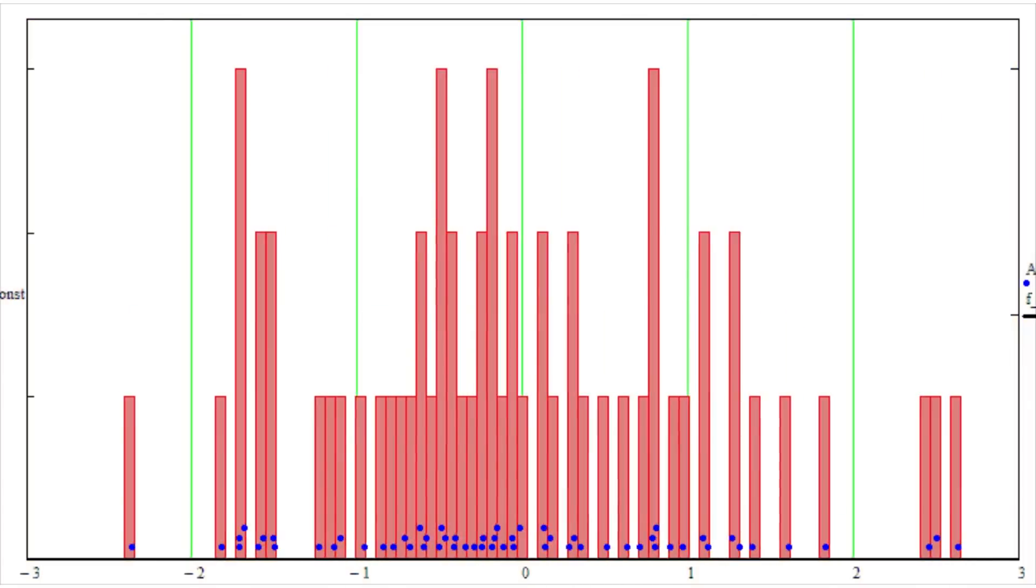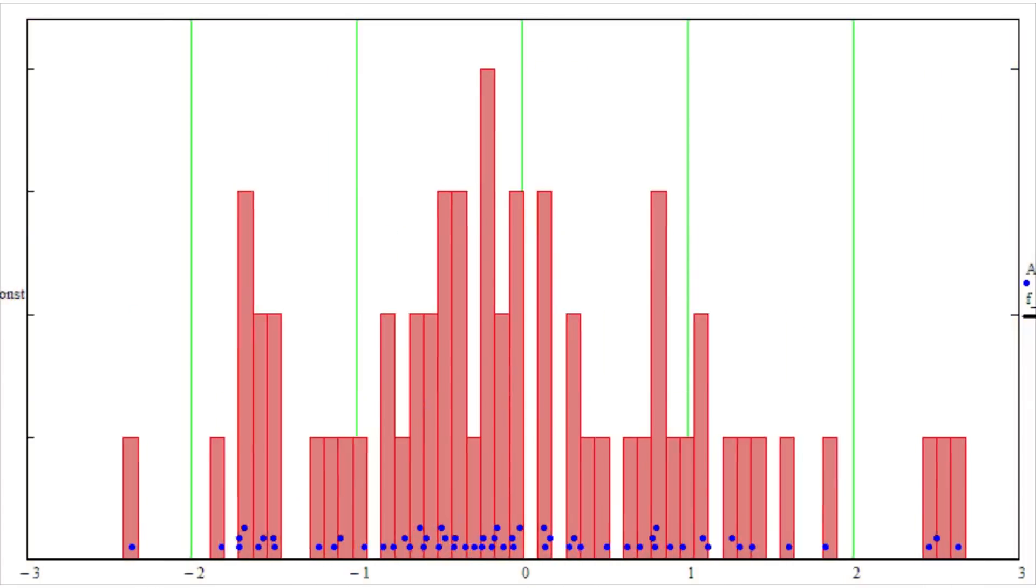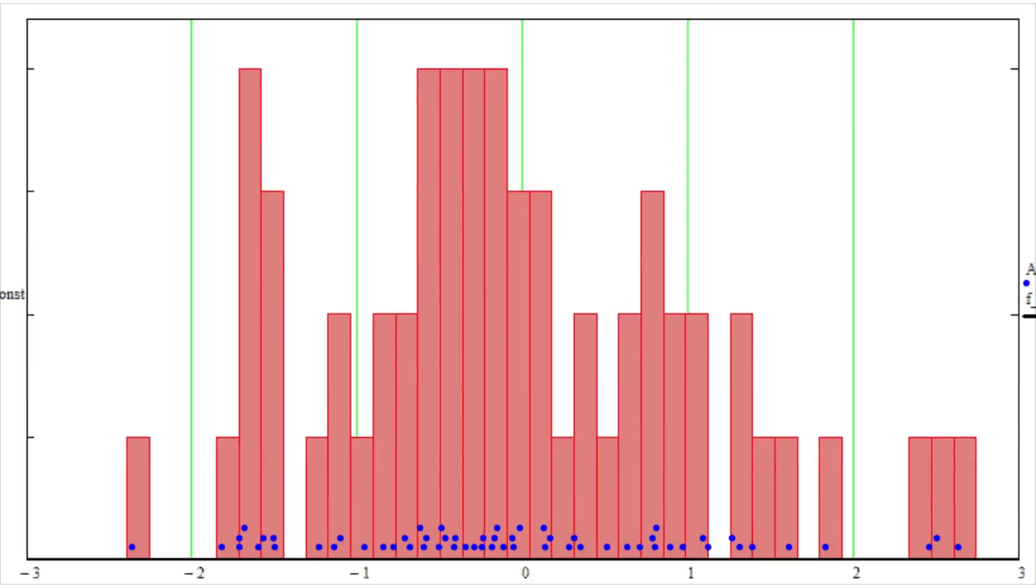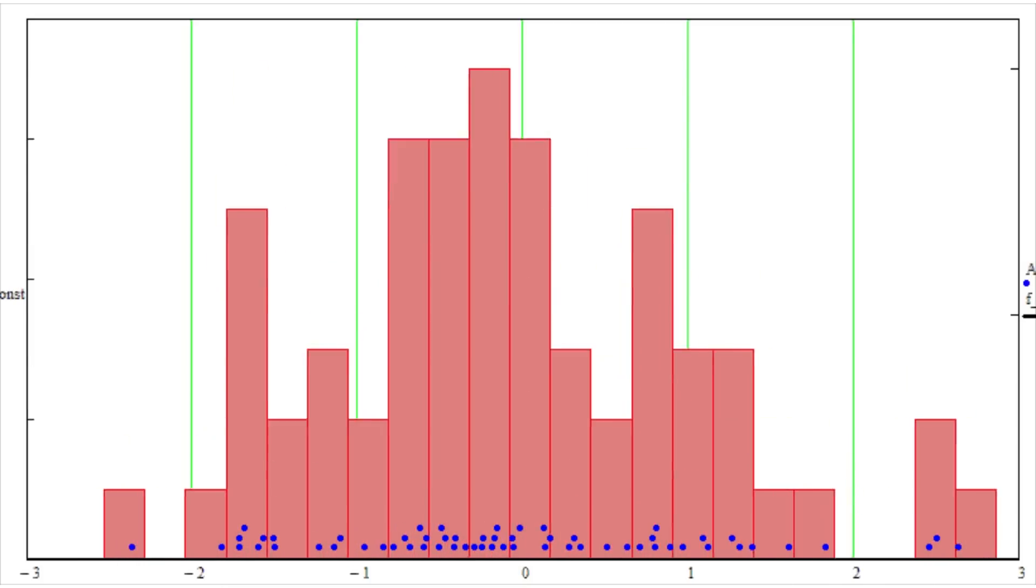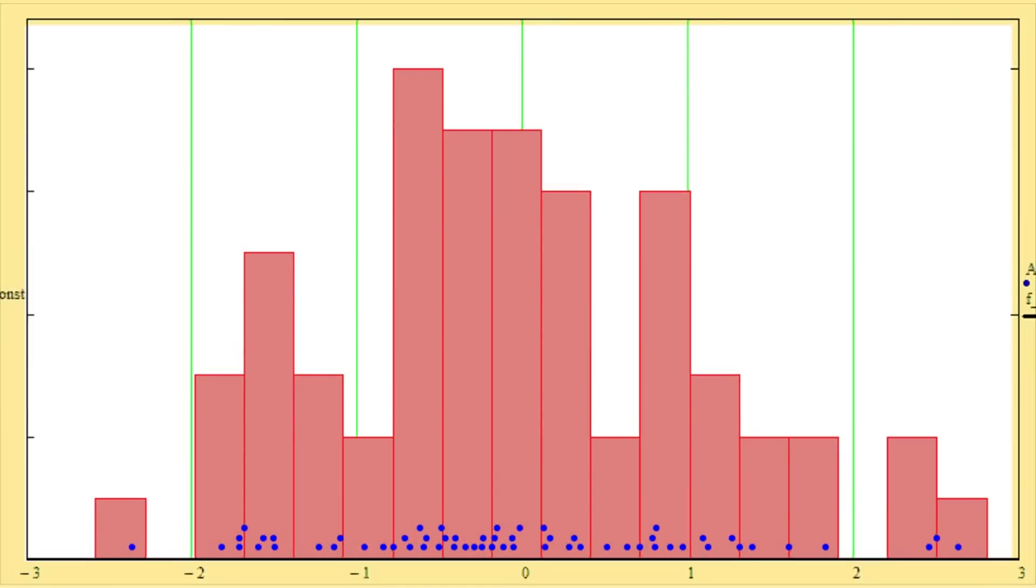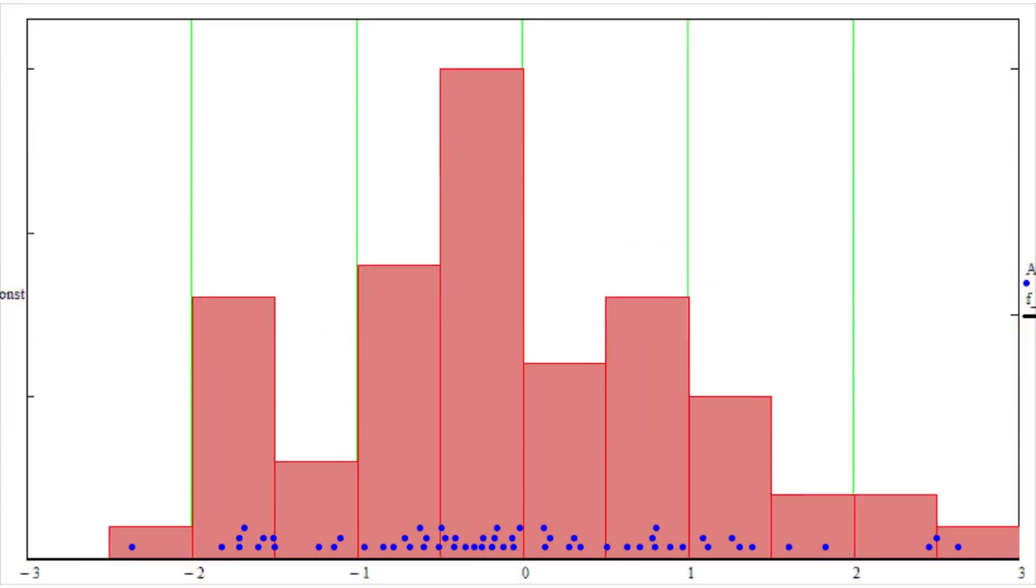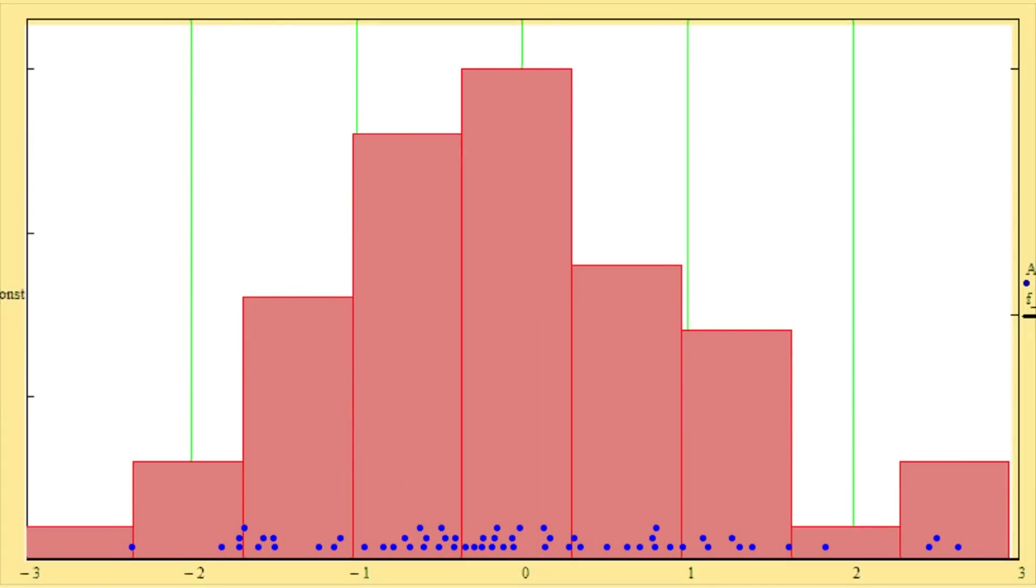This animation shows how the shape of the histogram changes if we change the bin size or if we change the starting point. You can see how completely different the images are and how completely different the conclusions about the distribution properties would be.